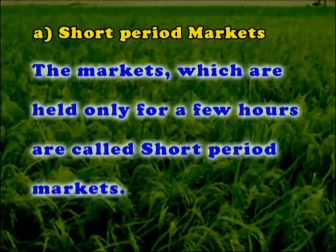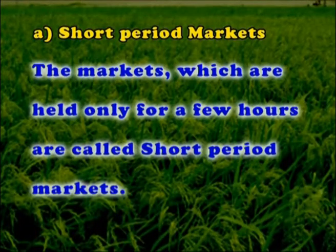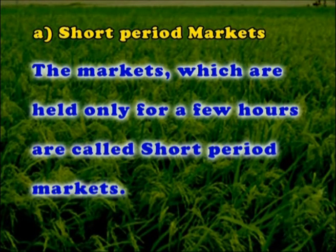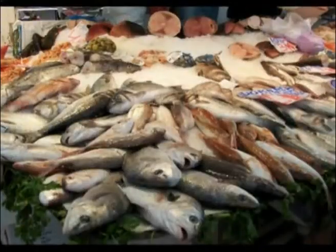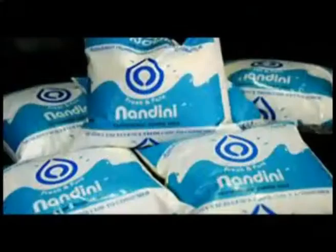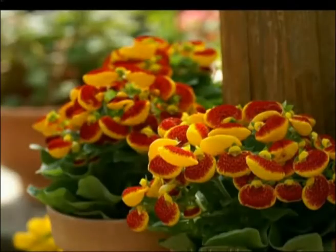Markets on the basis of time span can be grouped as follows. Short period markets are markets which are held only for a few hours. The products dealt with in these markets are of a highly perishable nature, such as fish, vegetables, milk, and flowers.